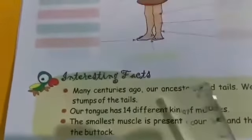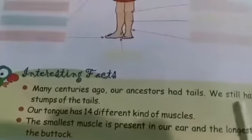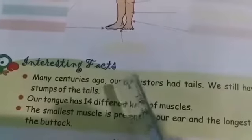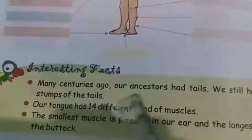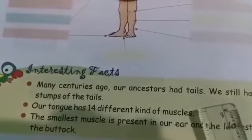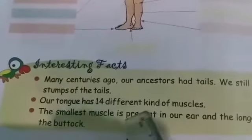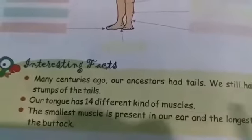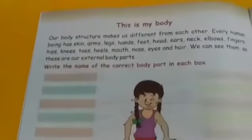Now come to the interesting facts. Many centuries ago our ancestors had tails. We still have stumps of the tails. This is a very interesting fact. Our tongue has 14 different kinds of muscles. The smallest muscle is present in our ear, and the longest is in the buttock.